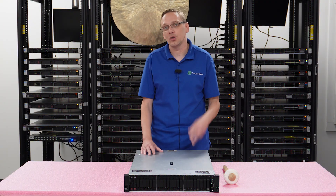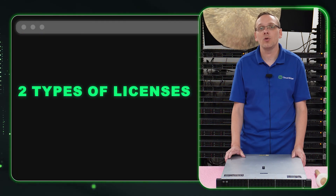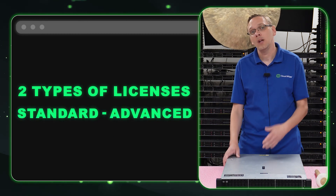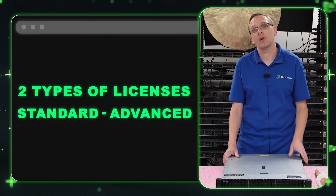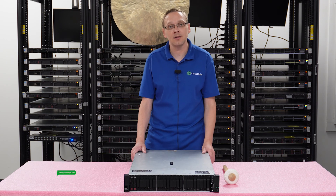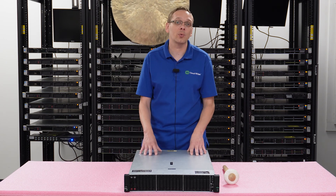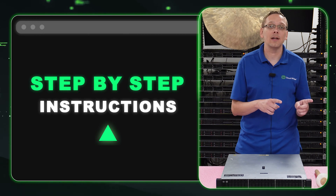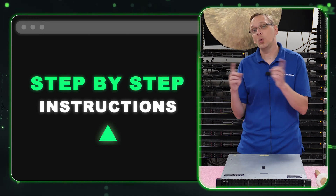With ILO there are two types of licenses: standard or advanced. Advanced is what you want. If you're looking for an ILO license, you can email our sales team at sales@CloudNinja.com and we can help you get a license. What we're going to do in this video is show you how to upgrade from a standard license to an advanced license.